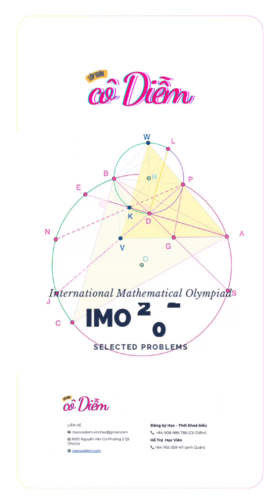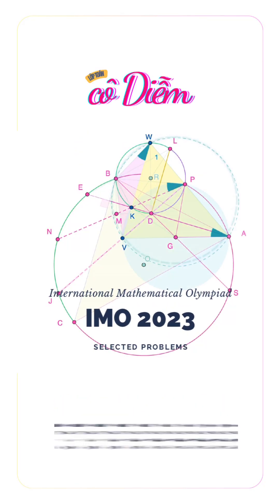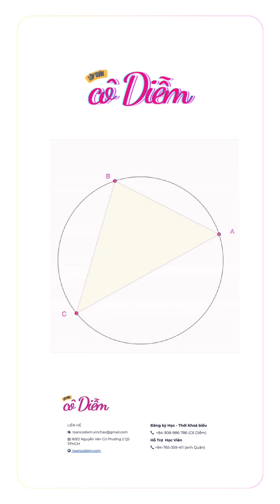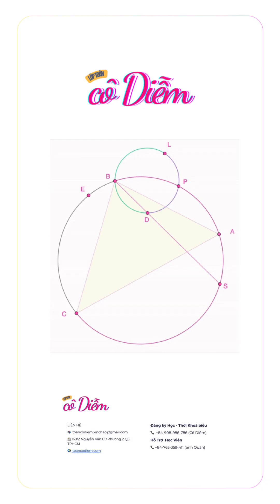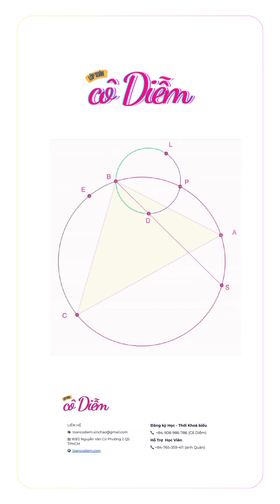IMO 2023 Problem 4. Prove that the line tangent to omega at P meets line BS on the internal angle bisector of angle BAC.